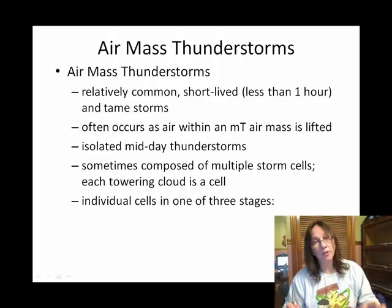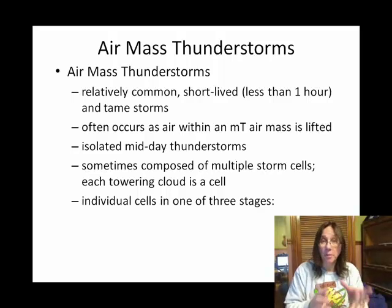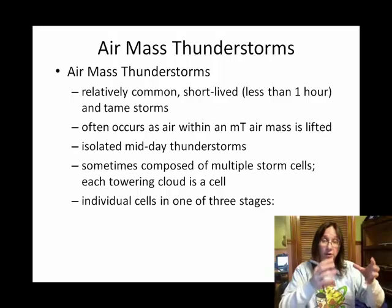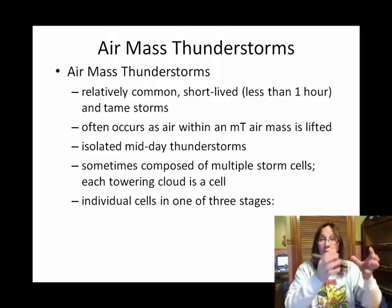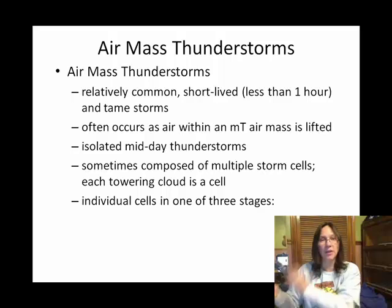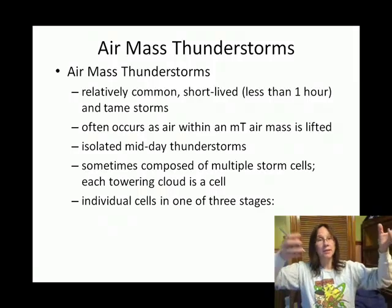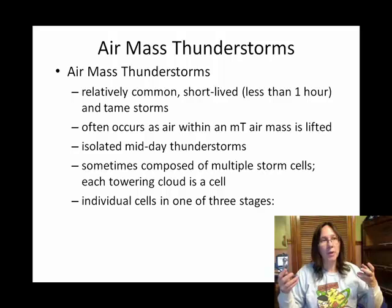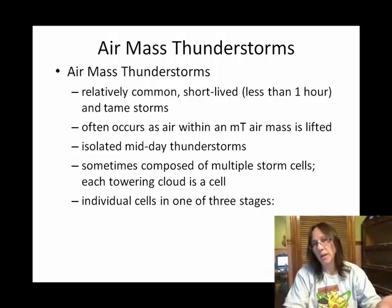The discussion of thunderstorms is organized to start with a simple thunderstorm cell, then build to supercells, and then talk about how multiple thunderstorm cells can work together as a system. We'll start with a simple scenario of unstable, moist air that rises, and its instability creates lightning within the cell, giving us what we call a thunderstorm.